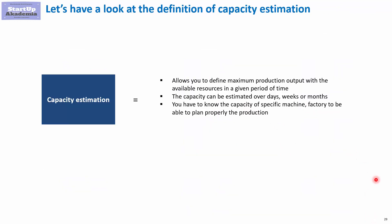The final term we'll discuss is capacity estimation. By capacity, we mean the total maximal production that we can create given our current resources. Usually this is calculated for a specific period of time — it might be a day, a week, a month, an hour, or a minute. We can calculate this for the whole factory or for a specific part of the process, and usually we would do both.